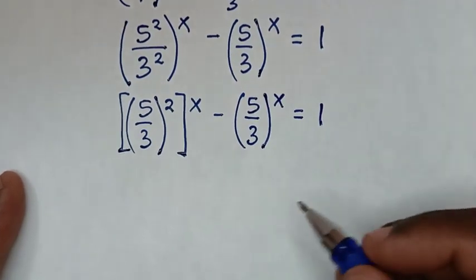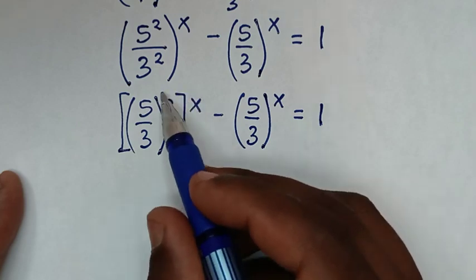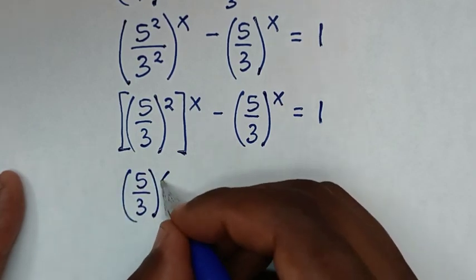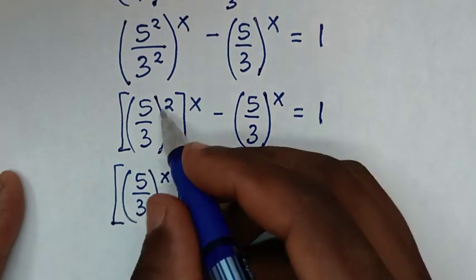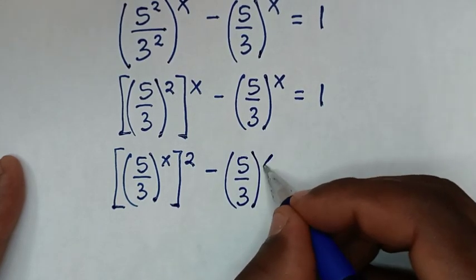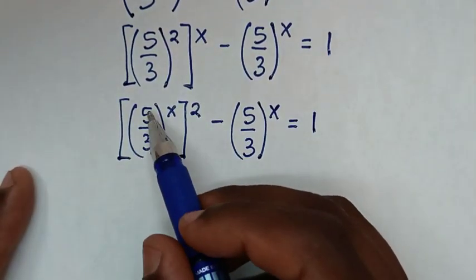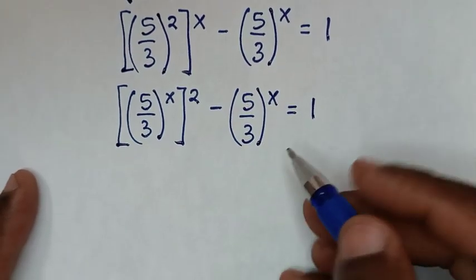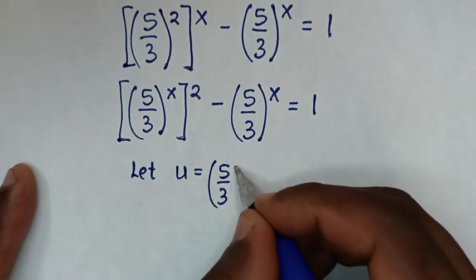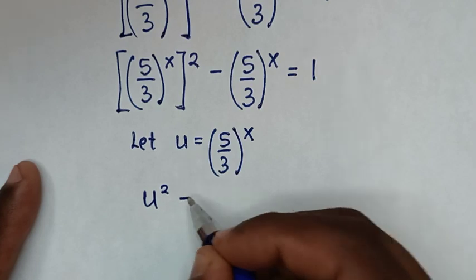We rewrite (5/3)^(2x) as [(5/3)^x]² by taking the power of 2 outside the bracket. Now (5/3)^x appears in both terms, so we substitute u = (5/3)^x. This gives us u² minus u equals 1.